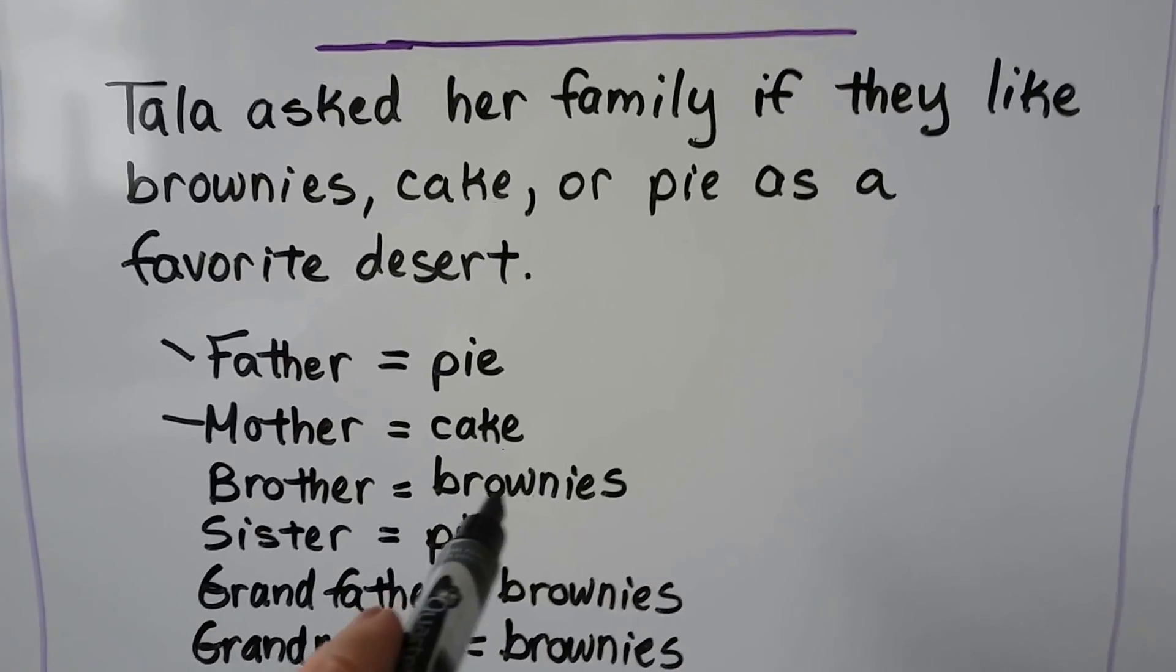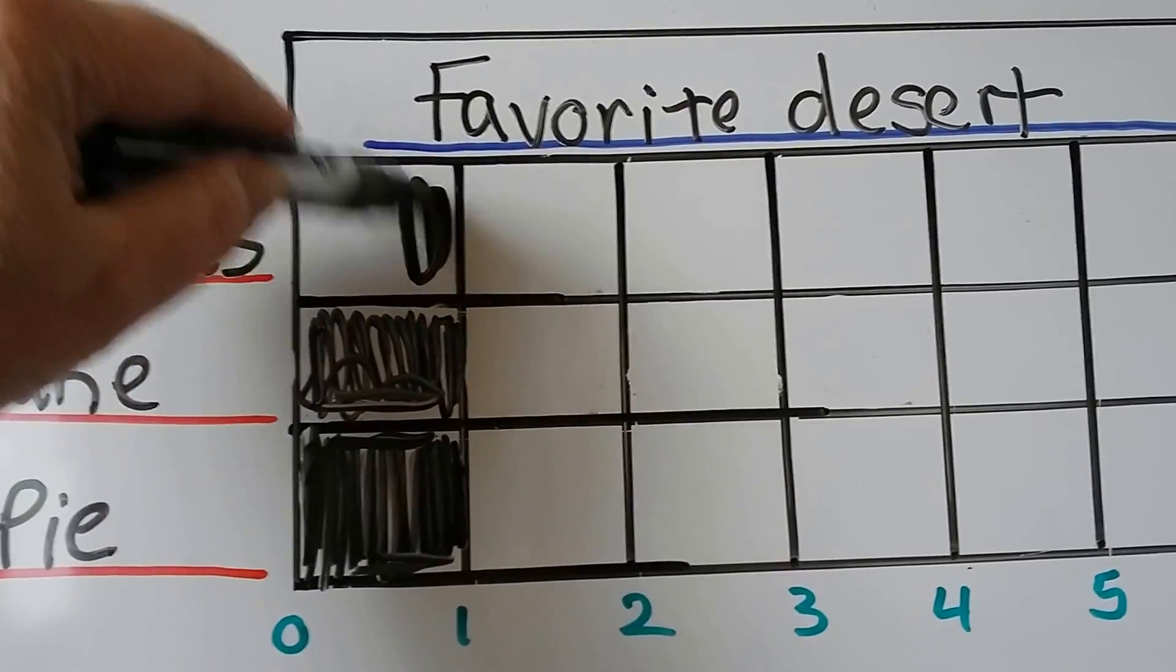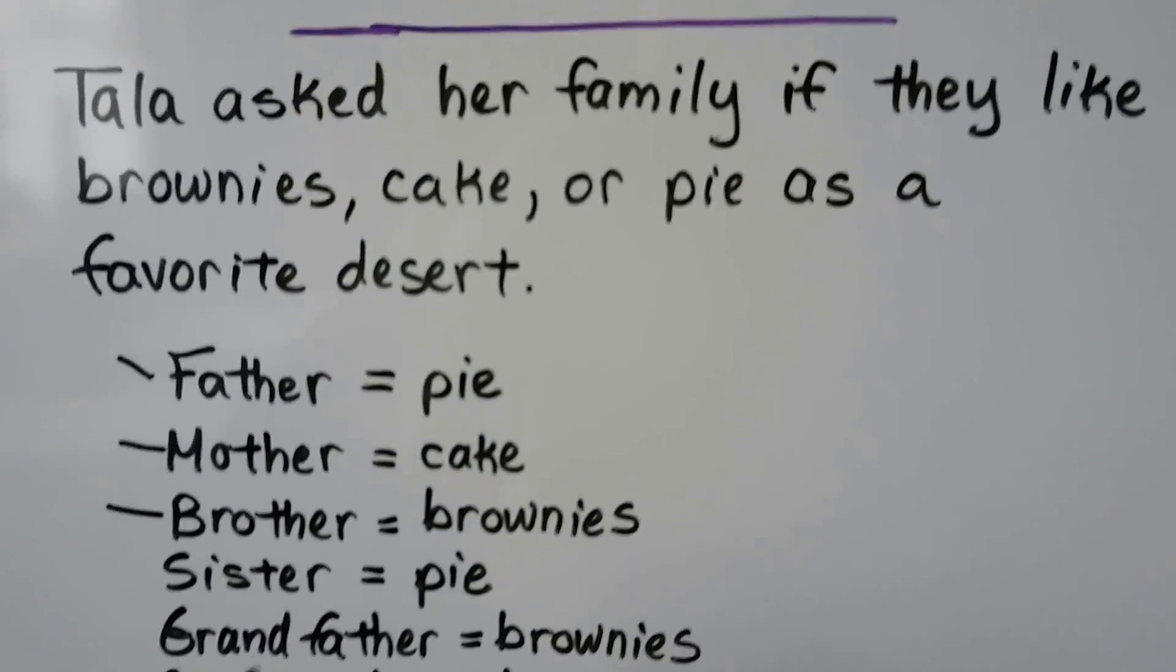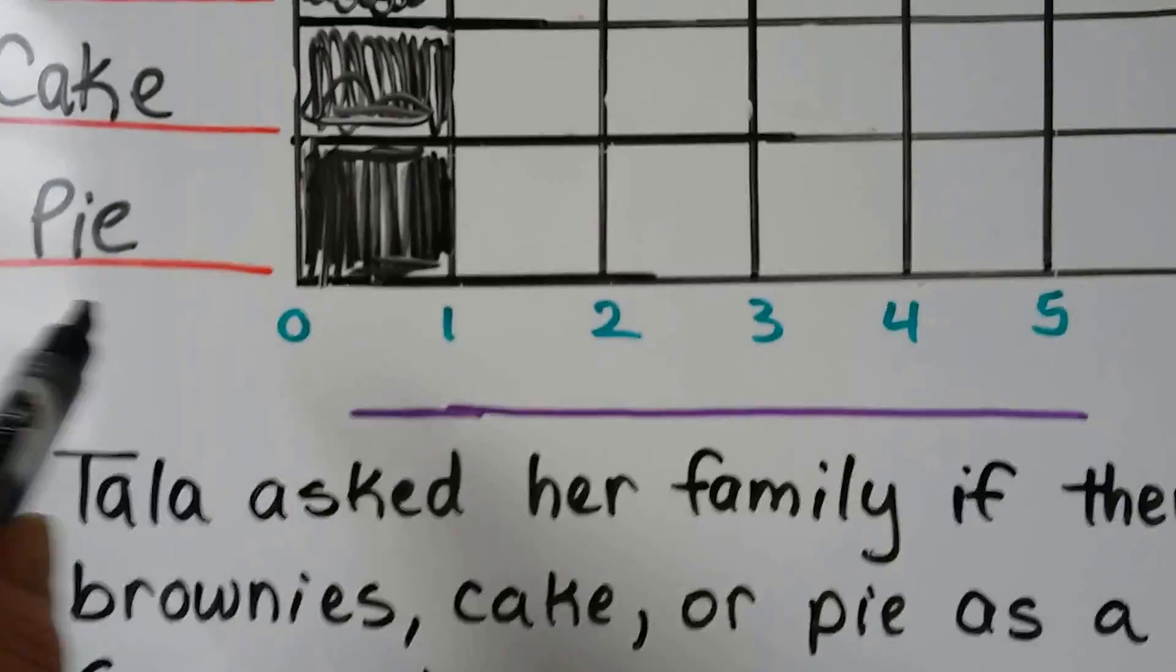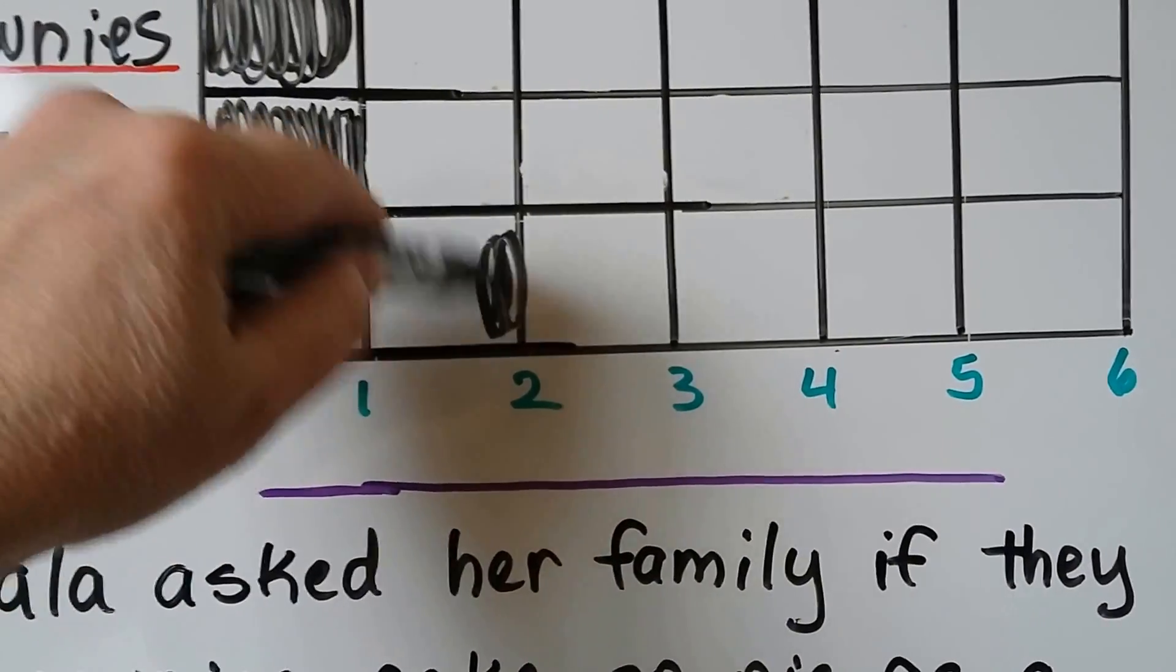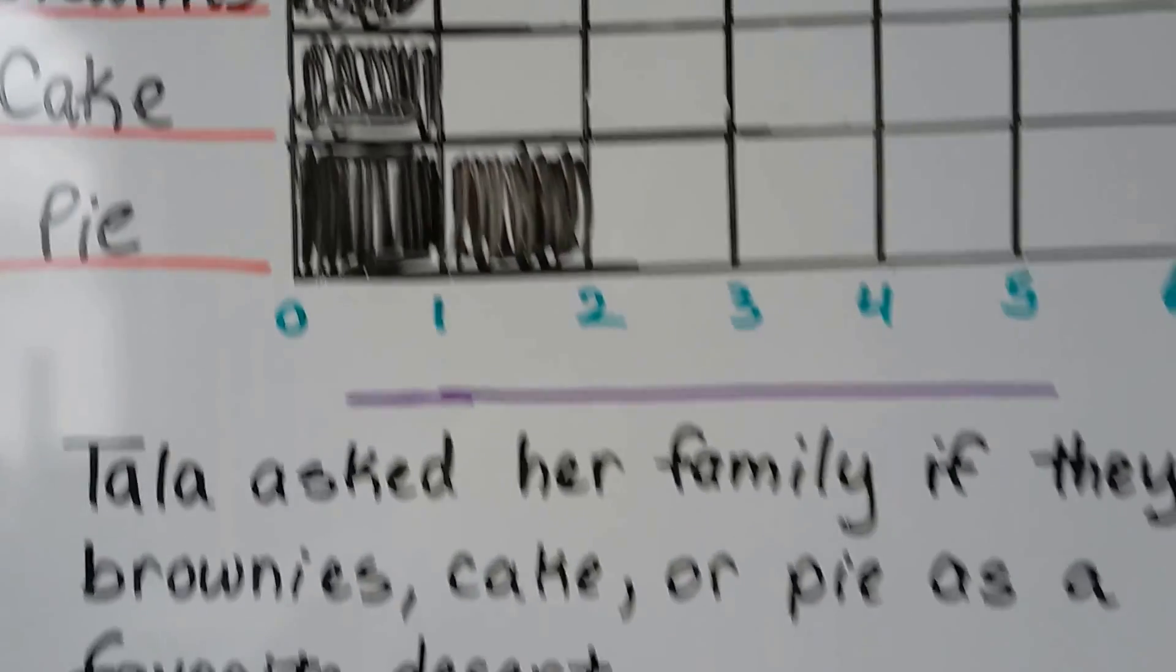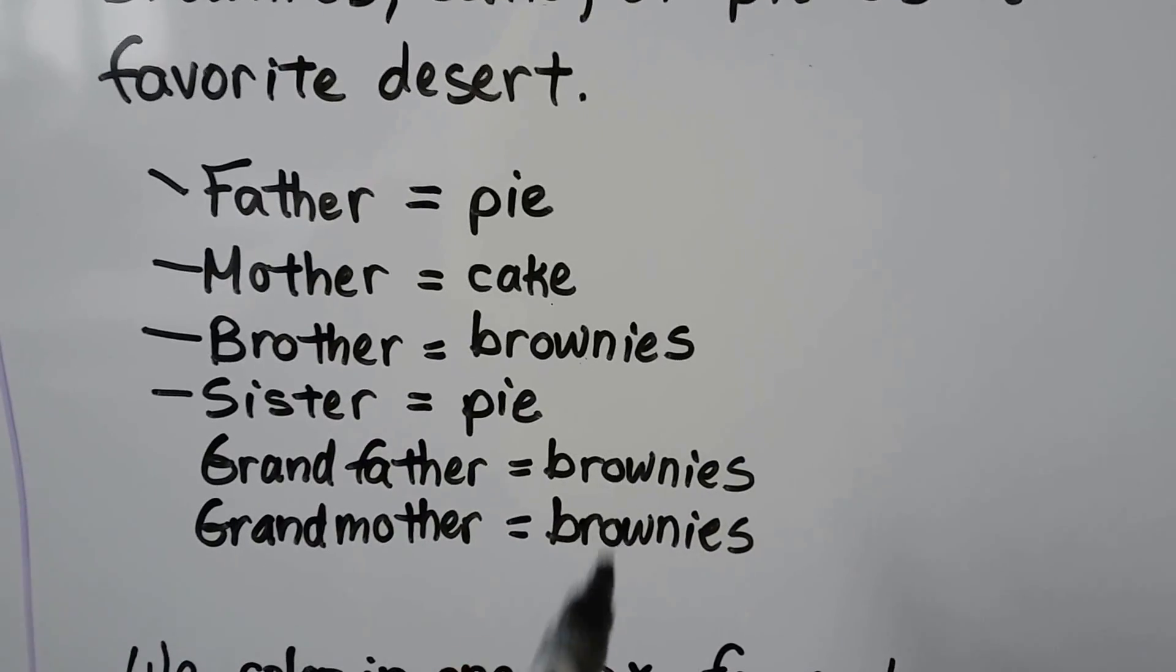The mother said she likes cake. So let's put a little mark here that we're answering the mother, and that's one vote for cake. So we can fill this one in. Her brother likes brownies. So let's do one vote for brownies for the brother. We can color this all in. Her sister likes pie. That's another vote for pie.